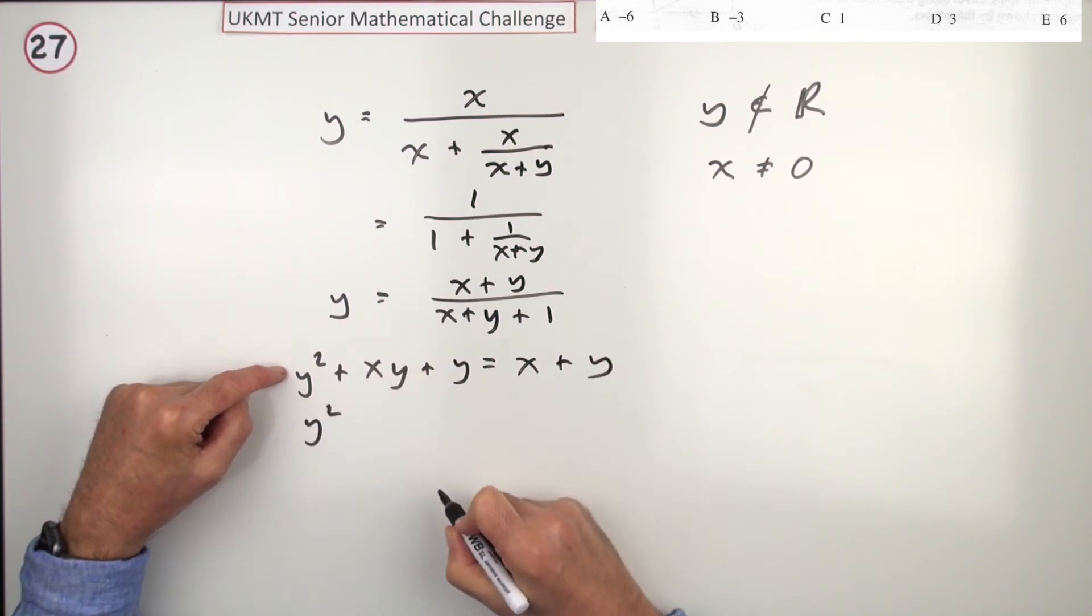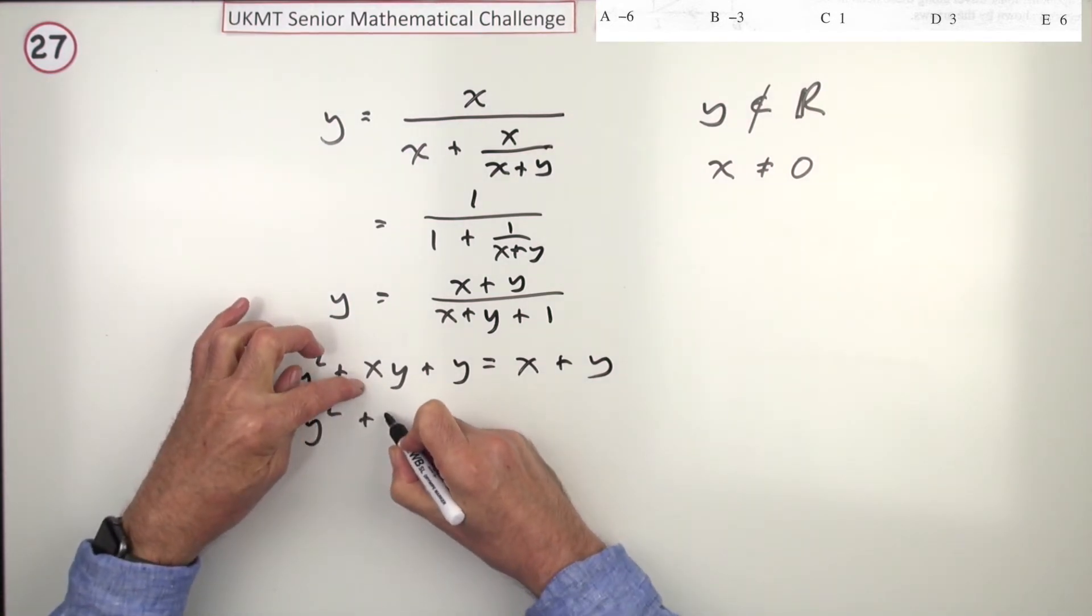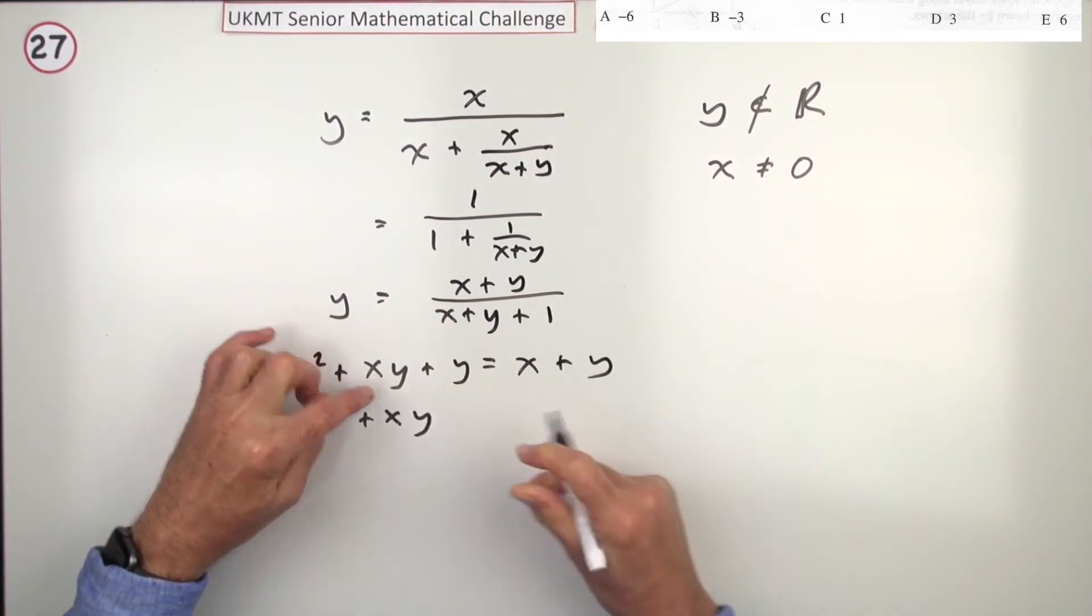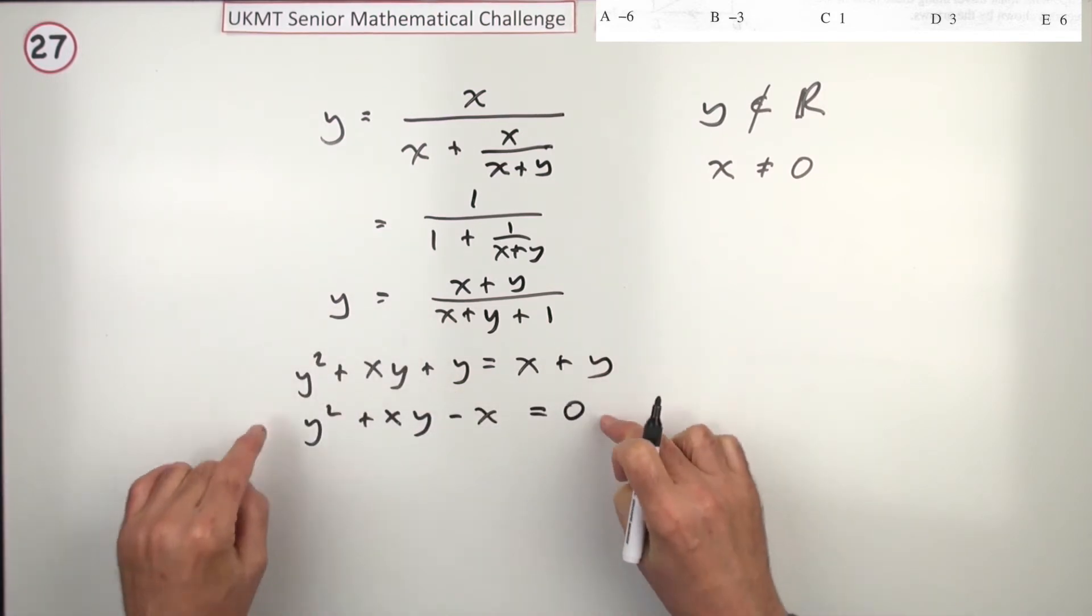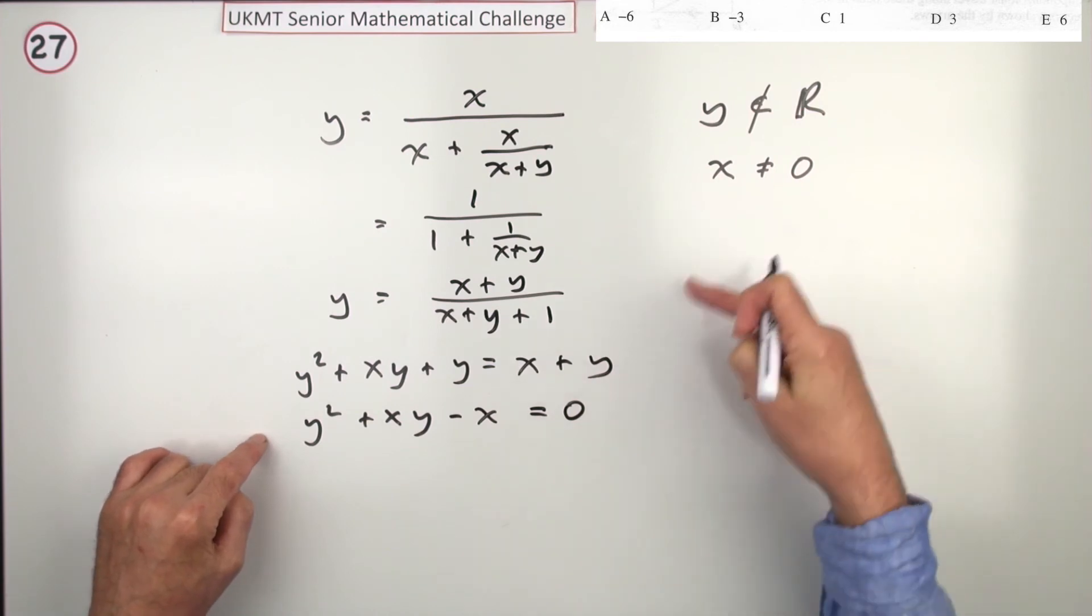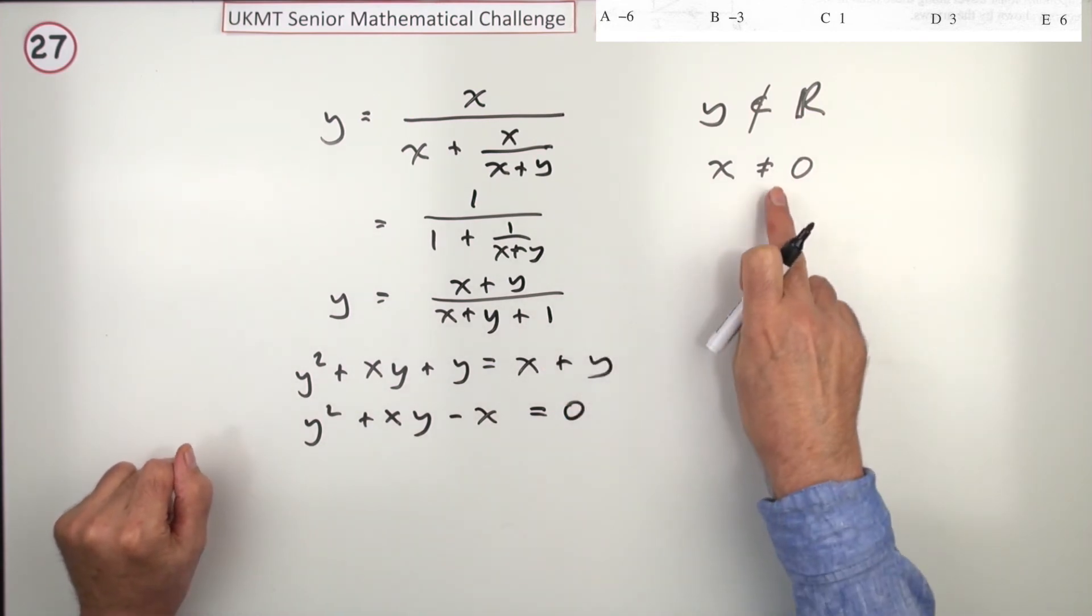That will be y squared plus x slots of y, because they cancel, minus x equals 0. So, that's what this reduces to, once I've divided out x, which you can do, because x can be 0.